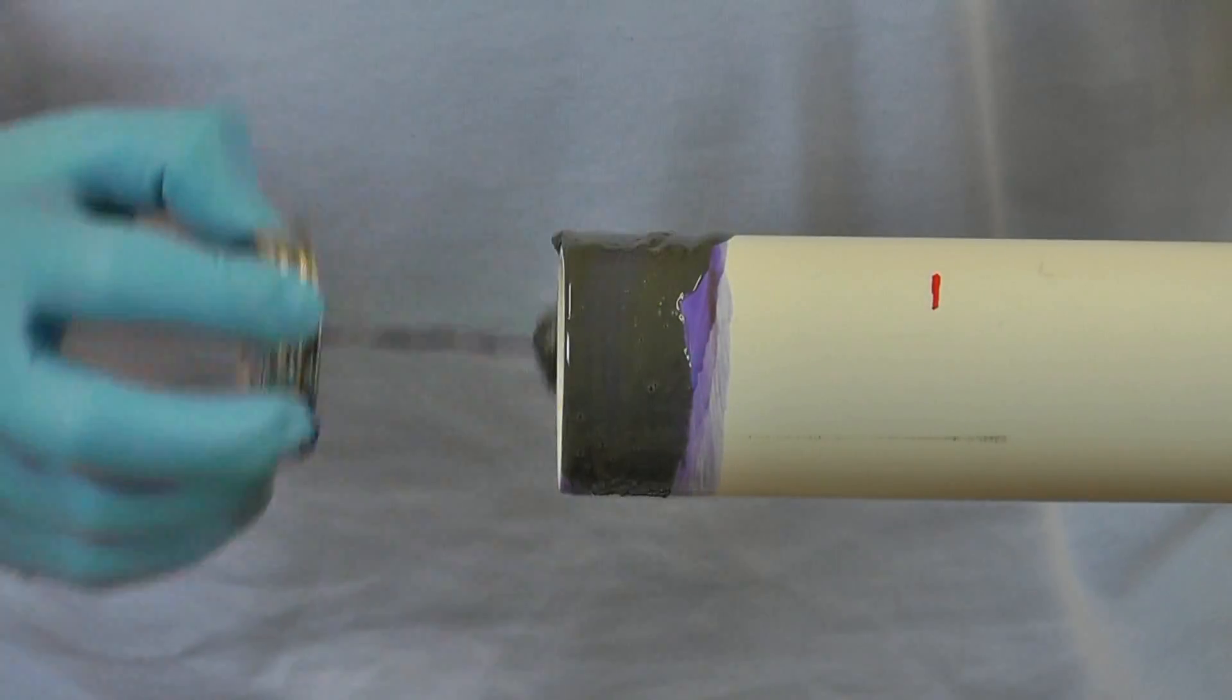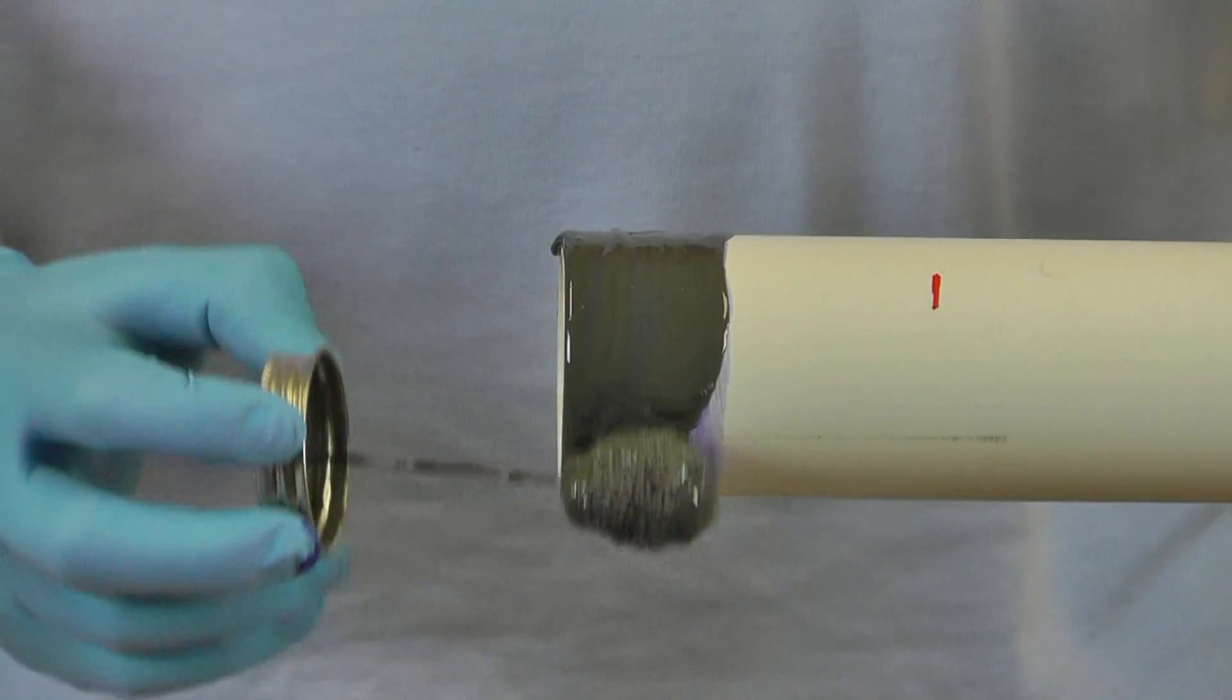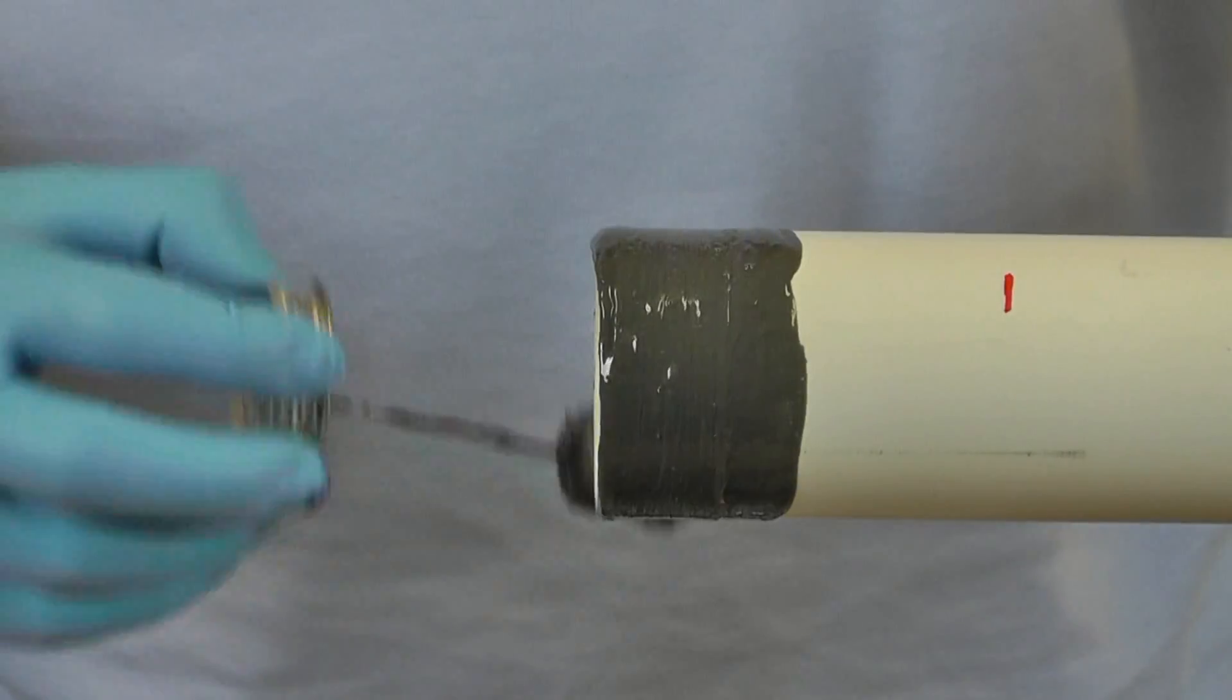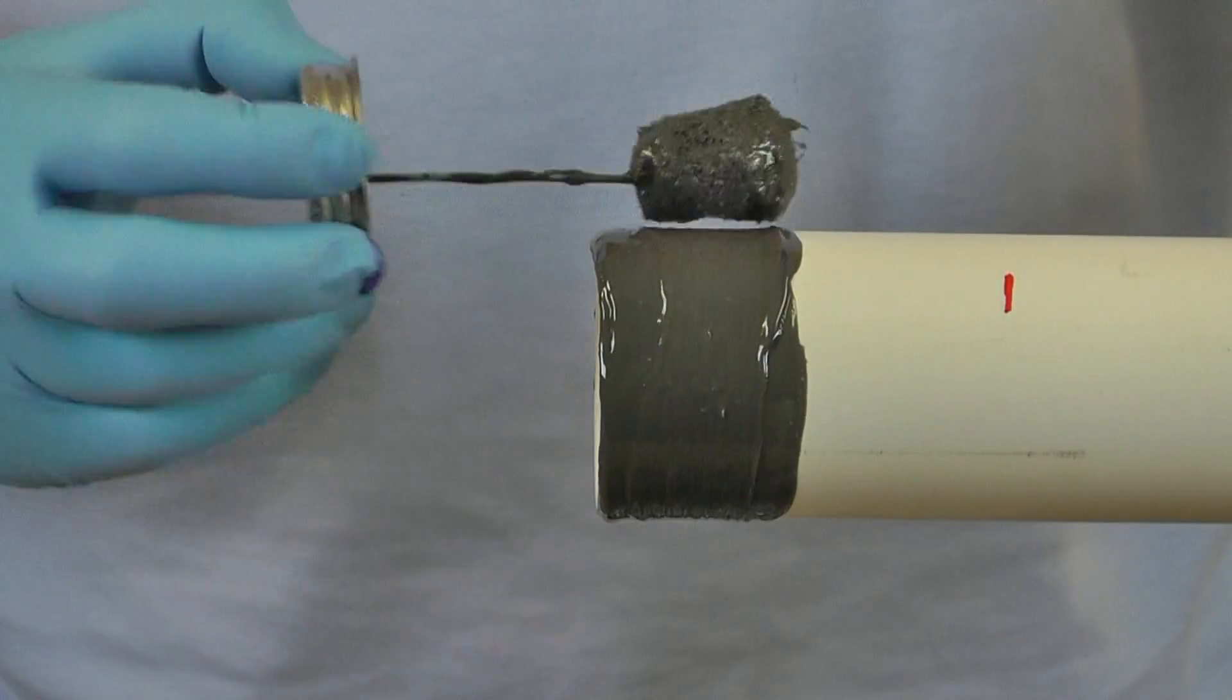Without delay and while the primer is still wet, apply the cement to the pipe, then to the fitting, and again to the pipe. Use a circular motion and apply a thick even coat to the pipe with a thinner even coat inside the fitting. Again, work quickly but do not allow cement to puddle inside the socket or run down the pipe.